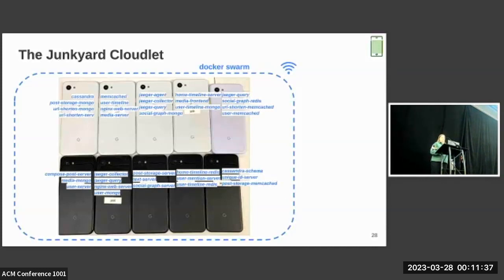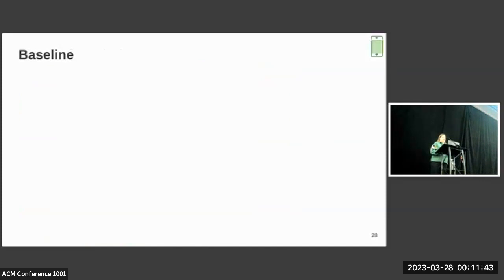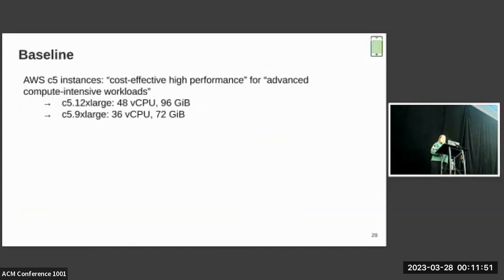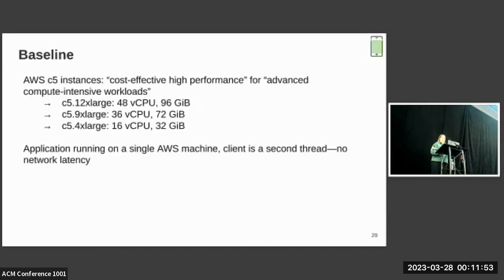For benchmarking, we connect using an external device, which runs the workload generator on the same local Wi-Fi network. As a baseline, we compare against several differently-sized AWS EC2 instances in the C5 flavor, the C5 12XL, 9XL, and 4XL. And in the AWS case, the entire application, so all of the microservices, are running on a single machine with a client and a second thread, so there's no network latency or latency between nodes.